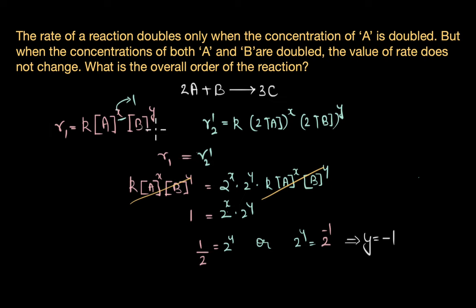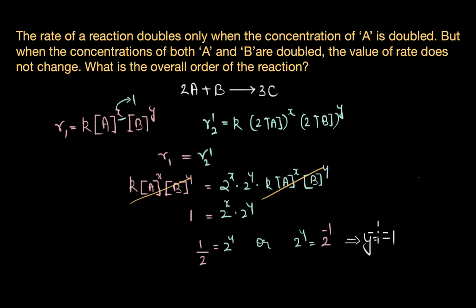A negative order of minus 1 with respect to reactant B suggests a scenario where the increase in concentration of A that increases the rate is exactly offset by the increase in concentration of B, and this is why the overall rate of the reaction remains constant. Although negative reaction order is much less common, an order of minus 1 with respect to reactant B indicates that this reaction has a highly complex mechanism — maybe it involves an inhibition step, a competing reaction pathway, or other complex interactions.